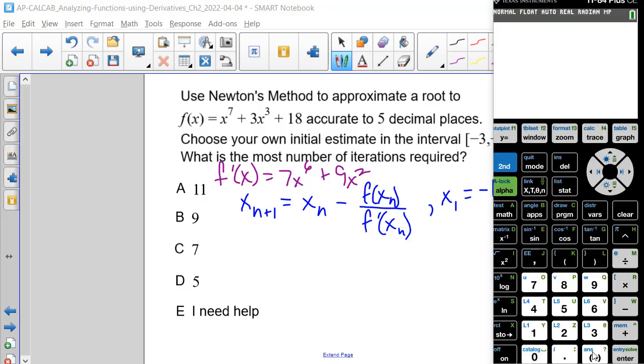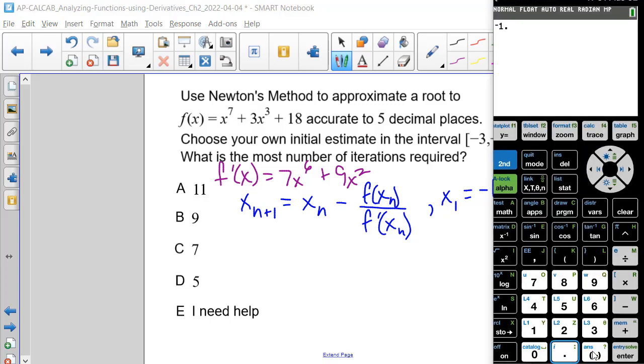So if we substitute negative 1 and a half in for our first x value, we would have negative 1 and a half minus, and then in parentheses, negative 1 and a half raised to the 7th power plus 3,